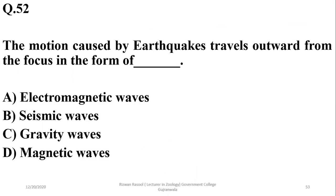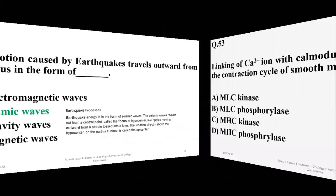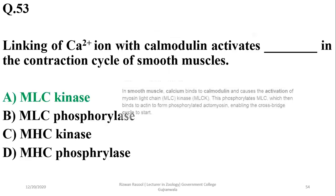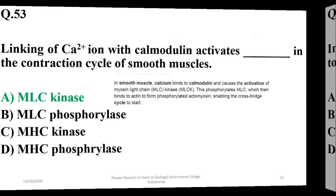Question 52: The motion caused by earthquakes travels outward from the focus in the form of seismic waves, so B is the right option. Question 53: Linking of calcium ions with calmodulin activates MLC kinase, which represents myosin light chain kinase enzyme — option A.